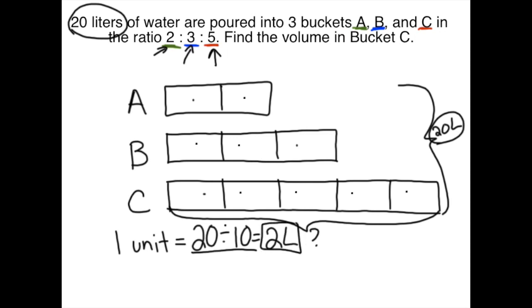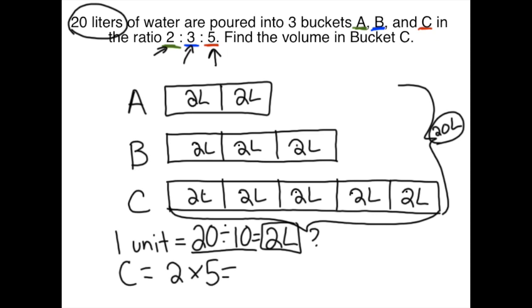Now that's just what's in each box. So if I know that each unit is two liters, I'm then able to figure out what the quantity of bucket C is. Bucket C is going to be two times five because I have five units. So C equals two times five, which equals 10 liters.